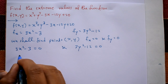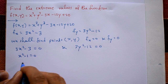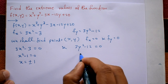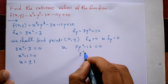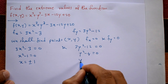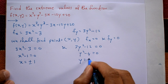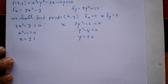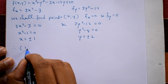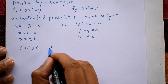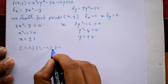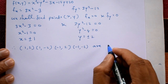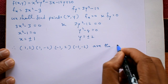From the first equation, taking 3 as common: x² - 1 = 0, so x = ±1. From the second equation, taking 3 as common: y² - 4 = 0, so y = ±2. Therefore, the stationary points are (1, 2), (1, -2), (-1, 2), and (-1, -2).